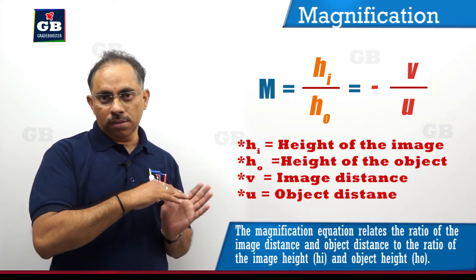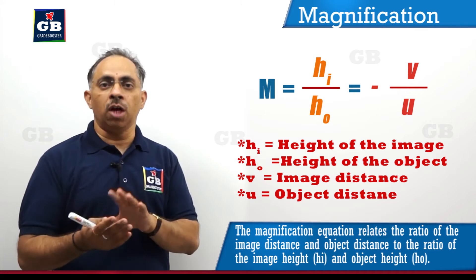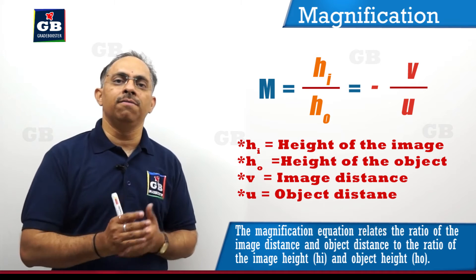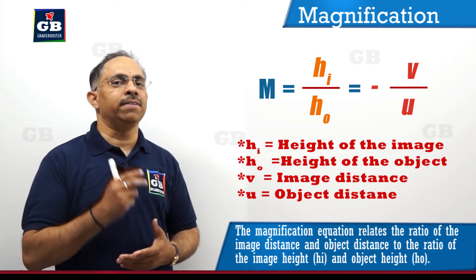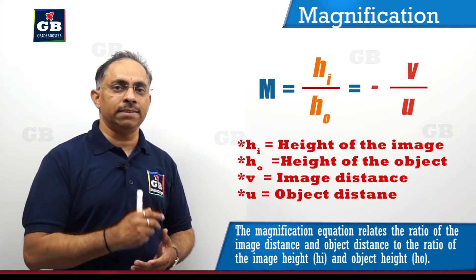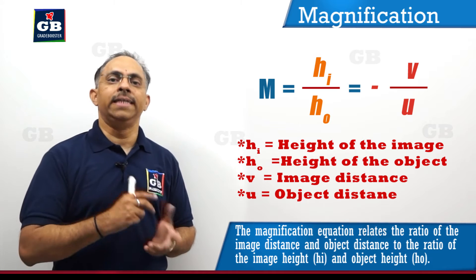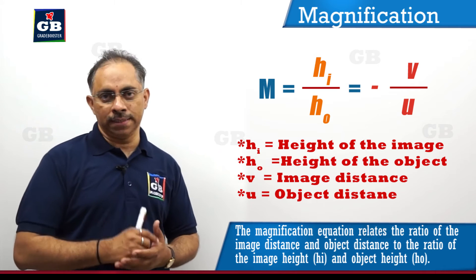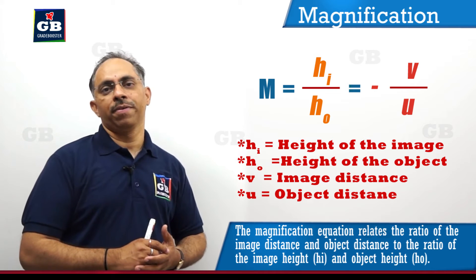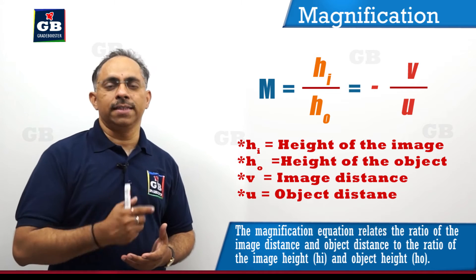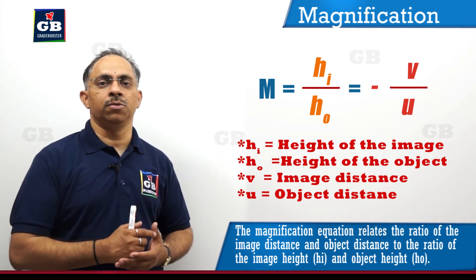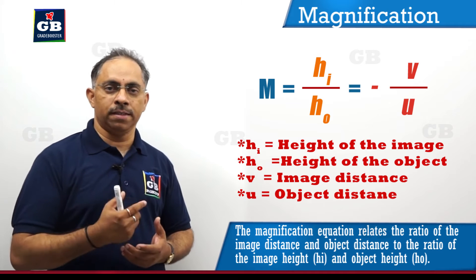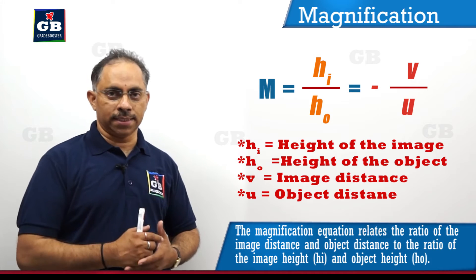When we use geometry and try to convert these heights of the images and heights of the objects in terms of their distances from the optic centre of the lens, we get this to be equal to image distance divided by object distance.